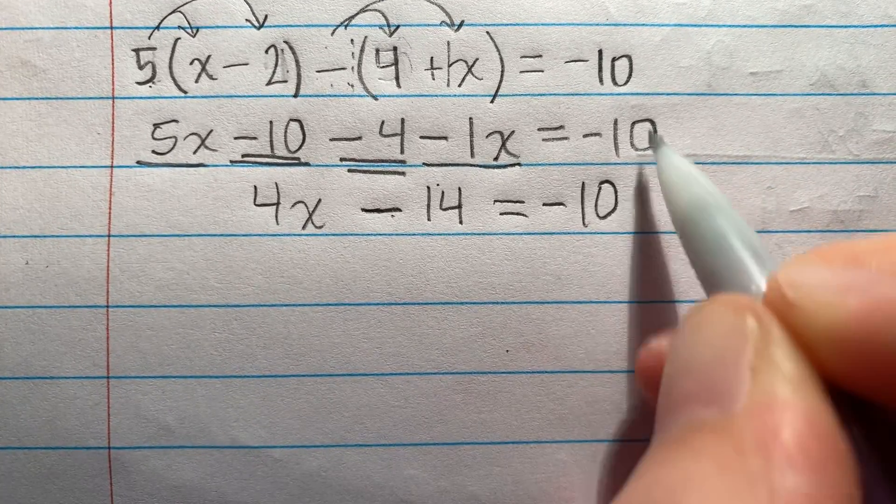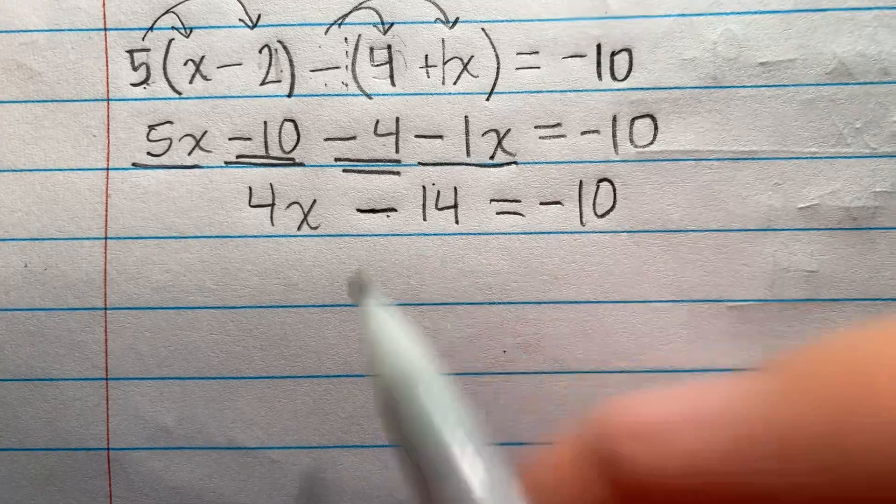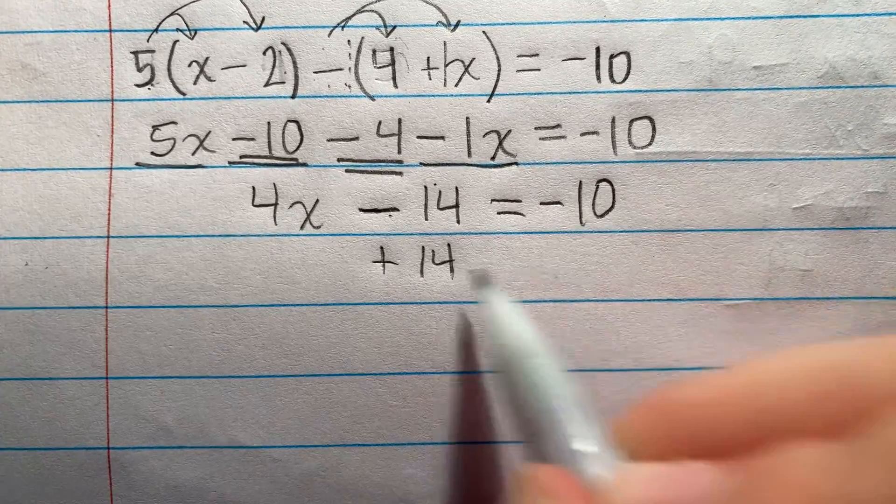And this equals negative 10. I'm just bringing that down. Now I need x by itself. So I have subtraction here, so I'm going to add to undo it.